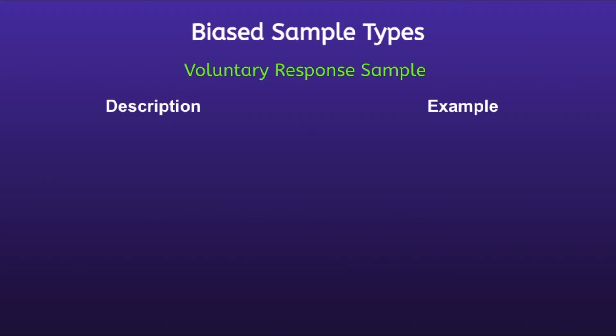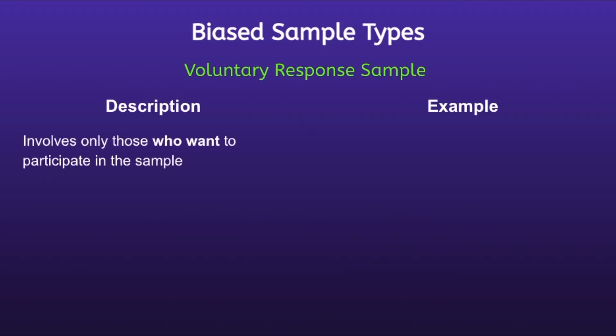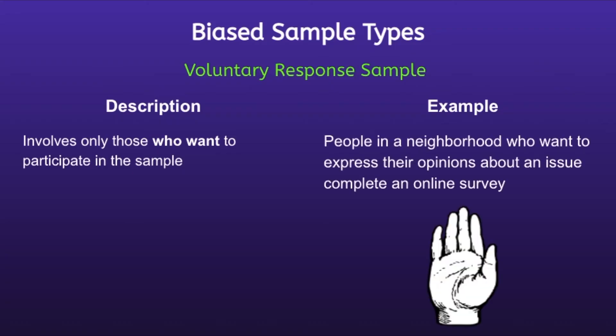Voluntary response sample: this type of sample involves only those who want to participate. For example, people in a neighborhood who want to express their opinions about an issue complete an online survey. This type of sample is voluntary — it's only taken by people who want to participate.